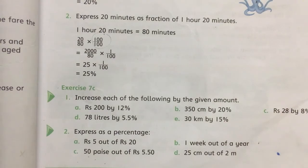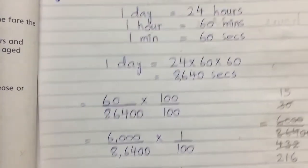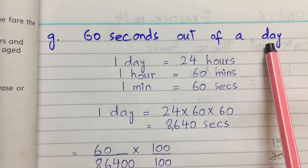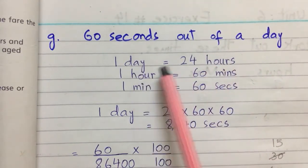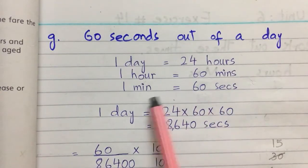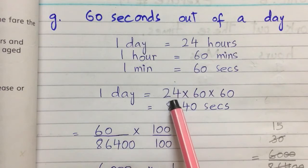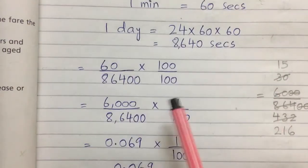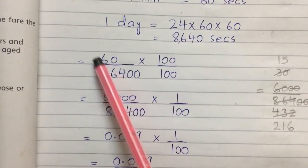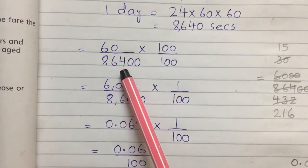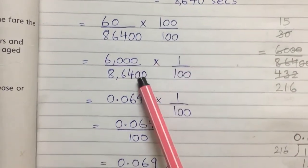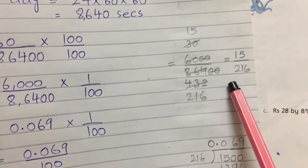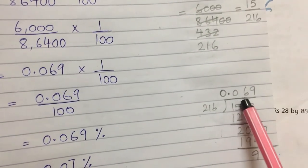Part g, the last part, is: 60 seconds out of a day. Convert a day into seconds: 1 day equals 24 hours, 1 hour equals 60 minutes, and 1 minute equals 60 seconds. So 1 day equals 24 multiplied by 60 multiplied by 60, which equals 86400 seconds. Write as a fraction: 60 divided by 86400, multiplied by 100 percent.